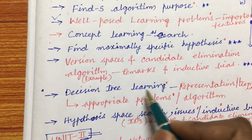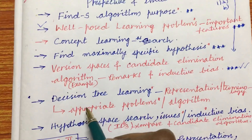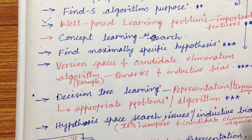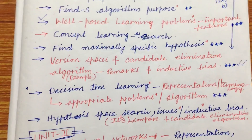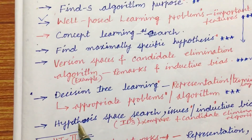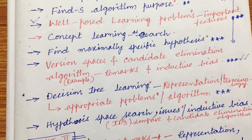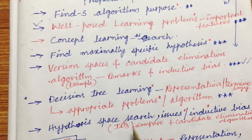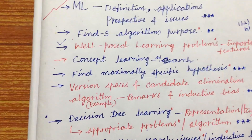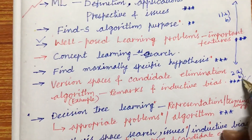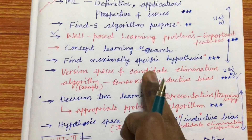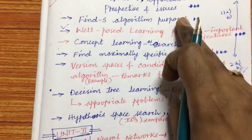Decision tree learning — its representation, terminology, appropriate problems, and algorithm — is also very important. Please make sure to work out all these algorithms and write your exam neatly using two sets of pens, blue and black. Hypothesis space search issues, inductive bias, and comparing hypothesis space search with ID3 and the candidate elimination algorithm are also very important questions. From this part we can expect the second question, either 2a or 2b, in a 10-5 or 7-8 mark combination. This covers Unit 1.